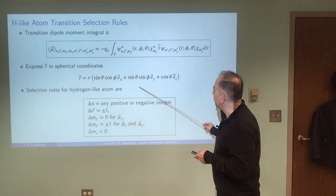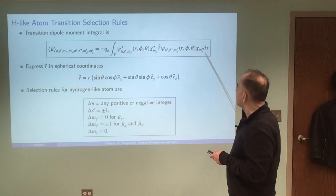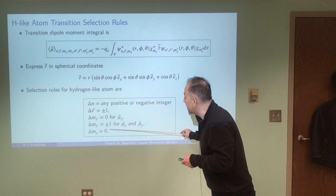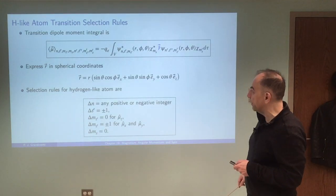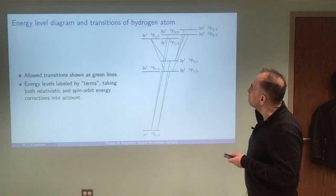And then you can see also that this doesn't interact at all with the spin part so delta MS is always going to be equal to zero. And that's it for the selection rules.